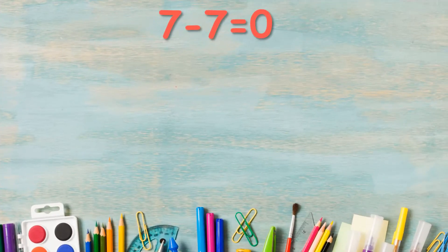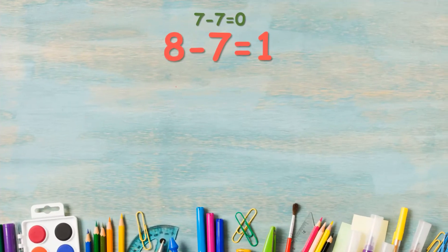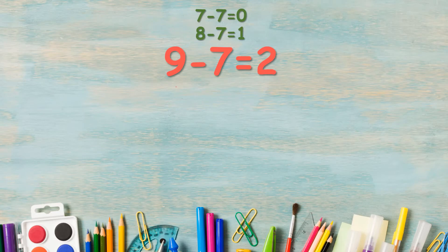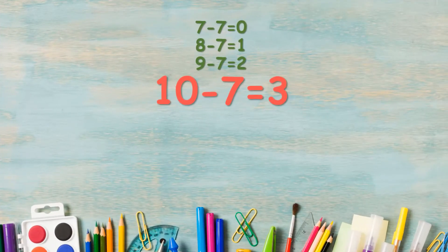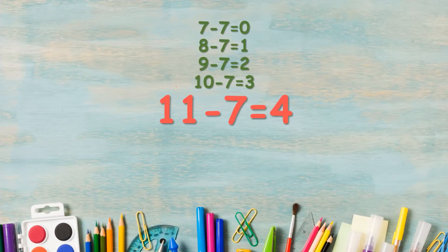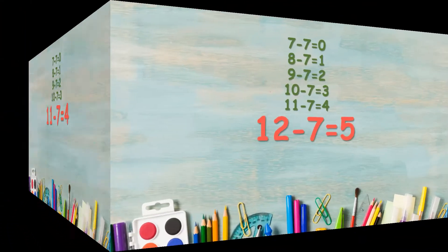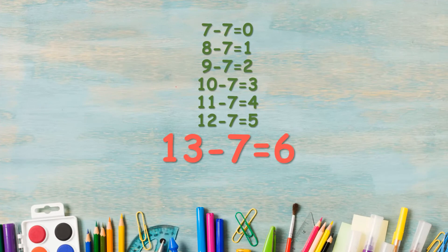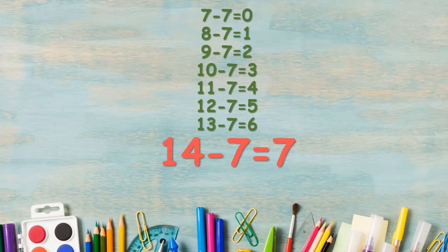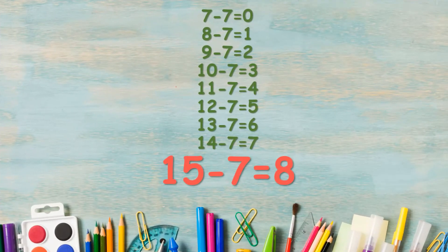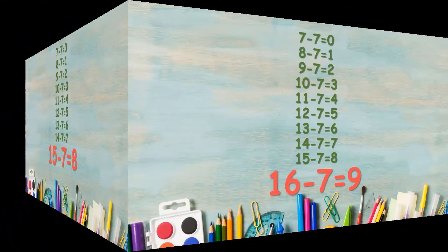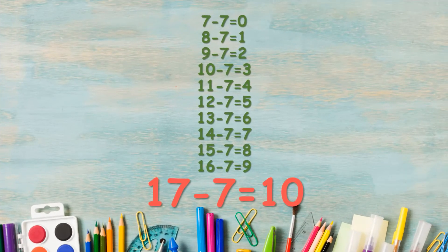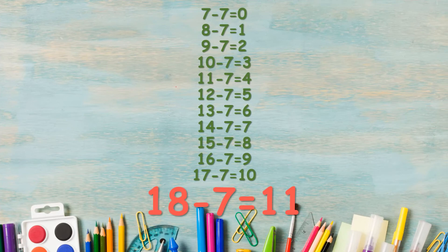Let us repeat. 7 minus 7 is equal to 0. 8 minus 7 is equal to 1. 9 minus 7 is equal to 2. 10 minus 7 is equal to 3. 11 minus 7 is equal to 4. 12 minus 7 is equal to 5. 13 minus 7 is equal to 6. 14 minus 7 is equal to 7. 15 minus 7 is equal to 8. 16 minus 7 is equal to 9. 17 minus 7 is equal to 10. And 18 minus 7 is equal to 11.